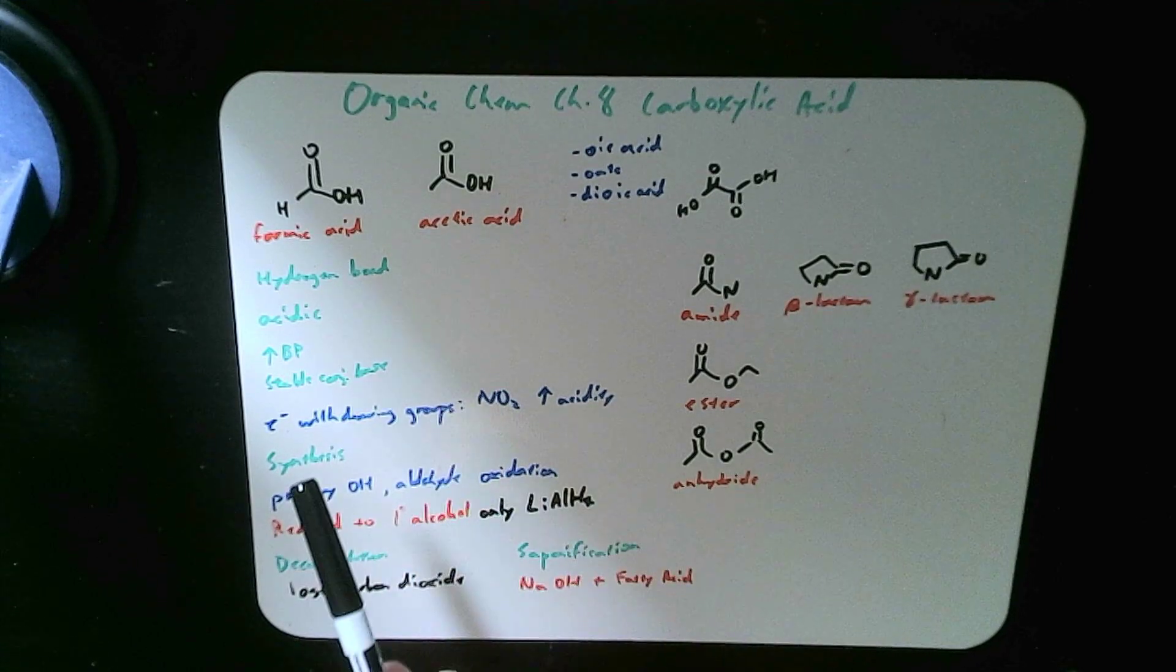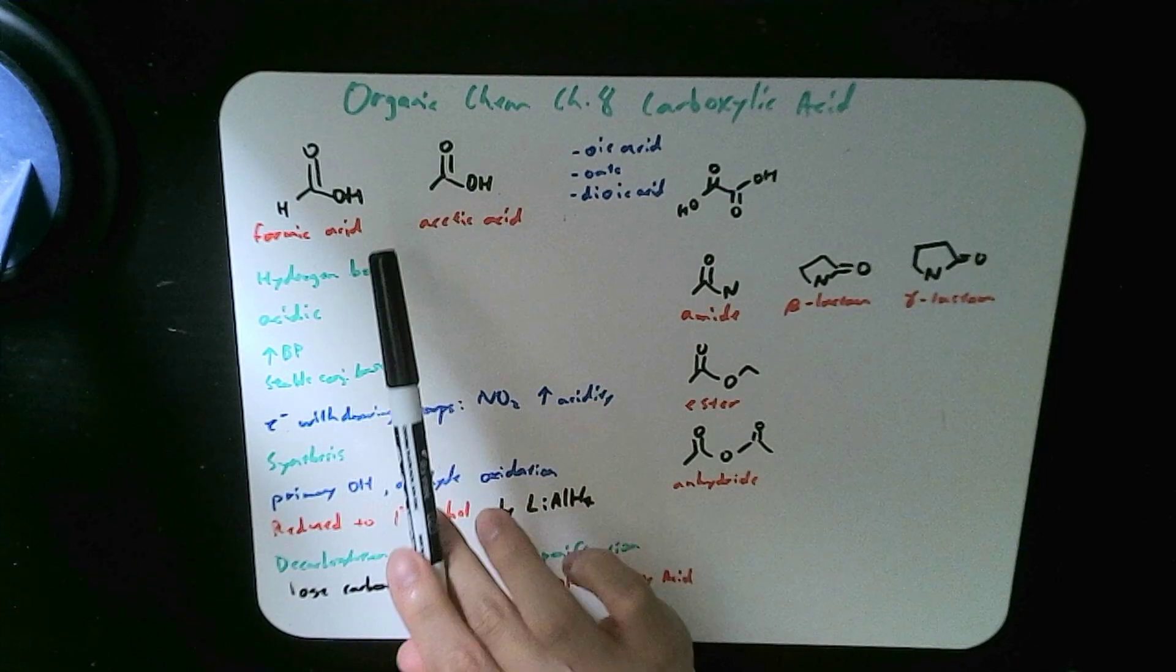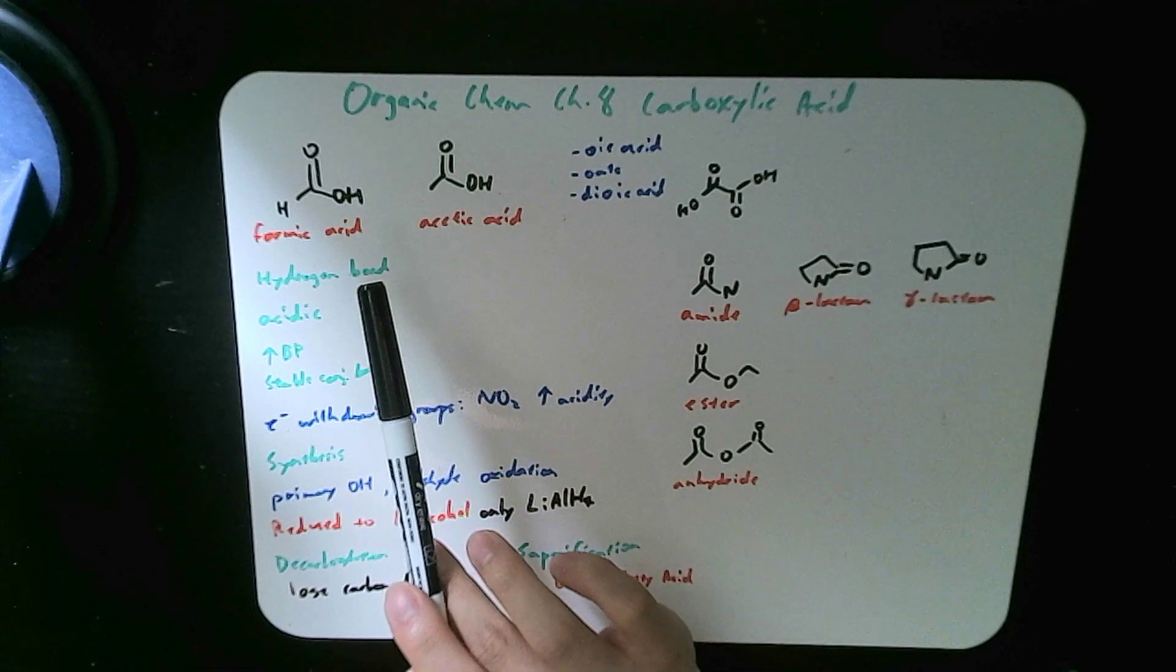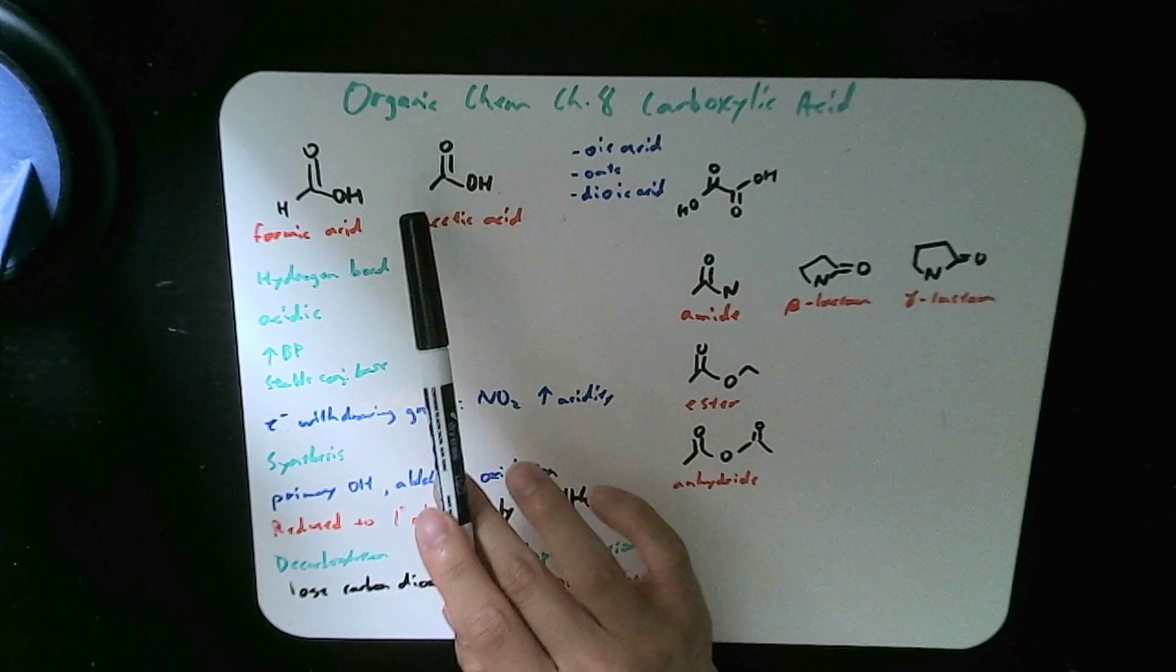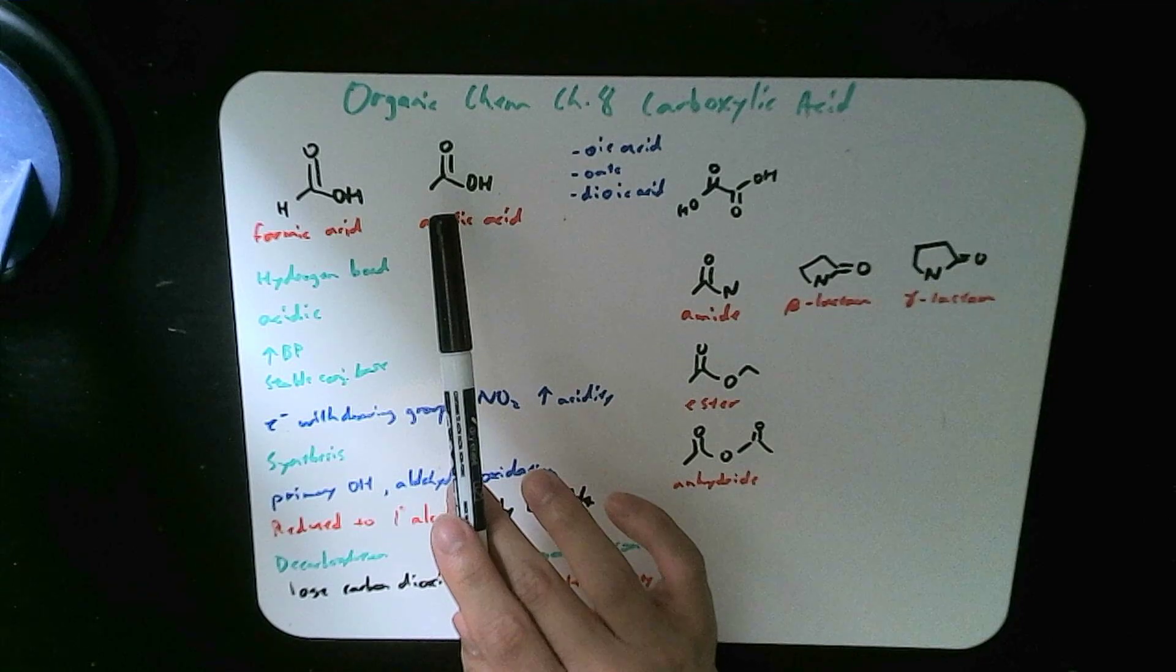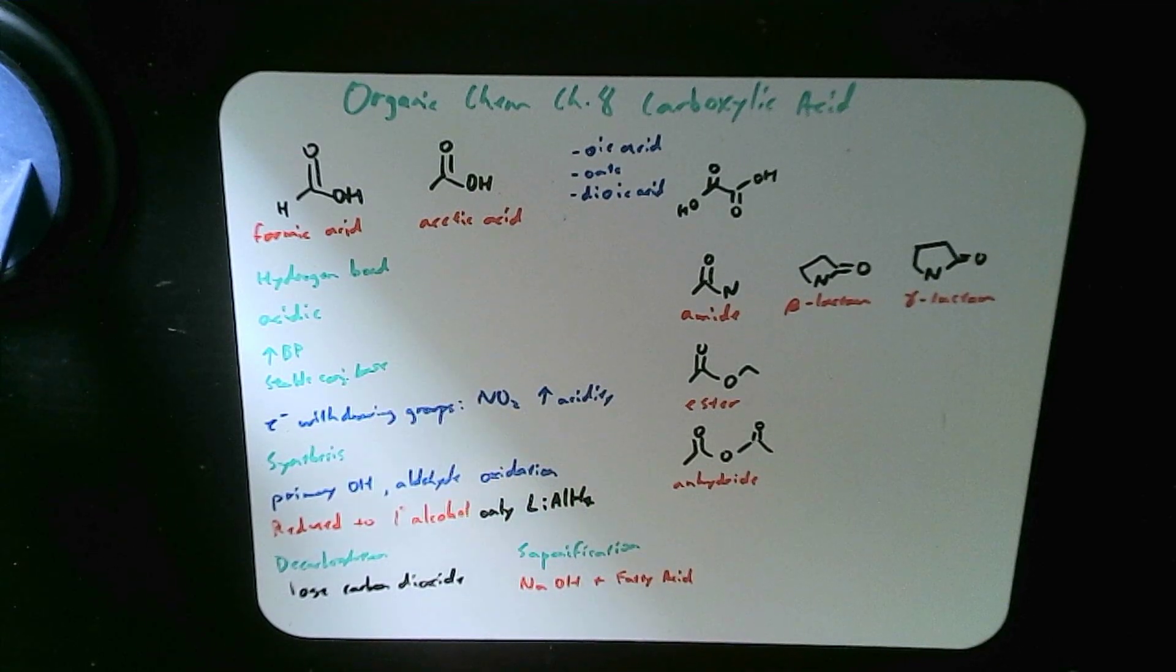We also have acetic acid. This is one, two carbons and this is two carbons, so that's ethane. So that's ethanoic acid, otherwise known as acetic acid.